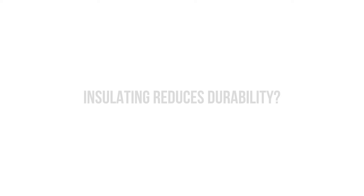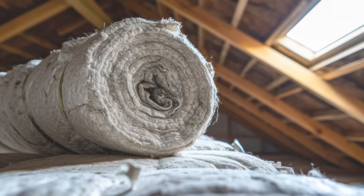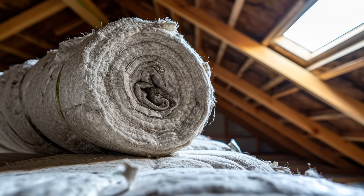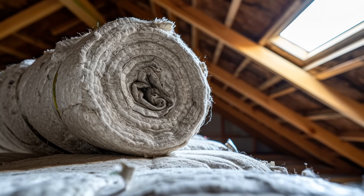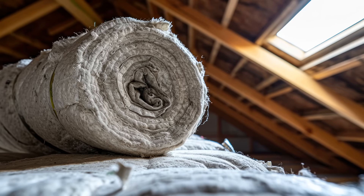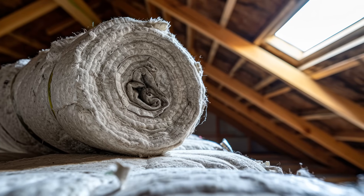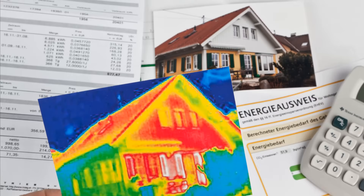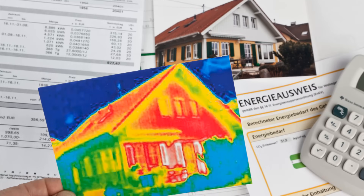But what if I told you that insulating can actually reduce durability? When we go to insulate a building, our goal is to reduce the amount of heat loss or heat gain. That's the purpose of insulation — it slows heat flow. However, we need heat flow for drying to occur if the building gets wet.